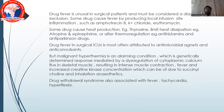Some drugs cause fever by producing local infusion site inflammation, such as amphotericin B, potassium chloride, and erythromycin. Some drugs cause increased heat production — for example, thyroxine — while others limit heat dissipation, such as atropine and epinephrine, or alter thermoregulation, such as antihistamines and antiparkinsonian drugs. Malignant hyperthermia is a genetically determined response involving dysregulation of cytoplasmic calcium flux in skeletal muscle, resulting in intense muscle contraction, fever, and increased creatine kinase concentration, triggered by succinylcholine or inhalation anesthetic agents. Drug withdrawal symptoms are also associated with fever, tachycardia, and hyperreflexia.